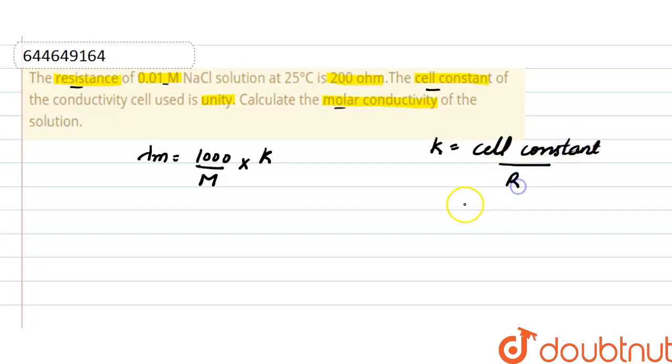So here cell constant is 1 and resistance is 200. Putting the value in the molar conductivity formula, lambda m equals 1000, concentration is 0.01, and specific conductivity is 1 by 200. So from here, molar conductivity is 500 Siemens centimeter square per mole.